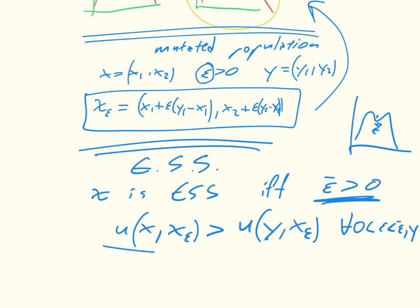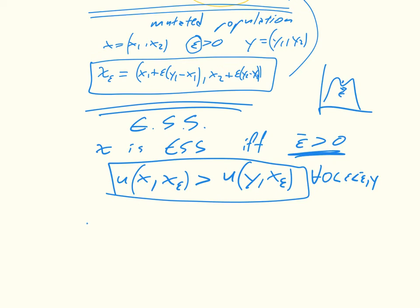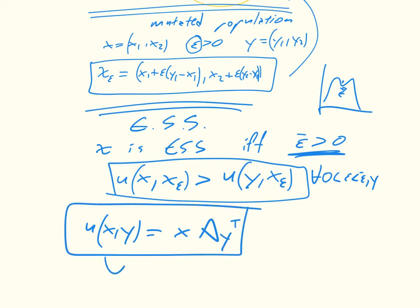So this is this notion of what is the utility of a strategy, and that's just given by u of x y is simply equal to x a y transpose, so it's just the utility of x in a population where everyone's playing y. So that is evolutionary stable strategies, and what we'll take a look at is